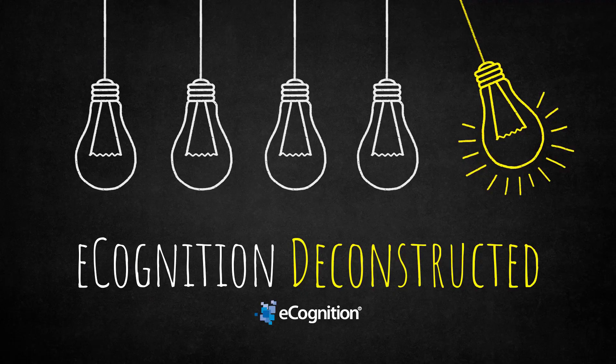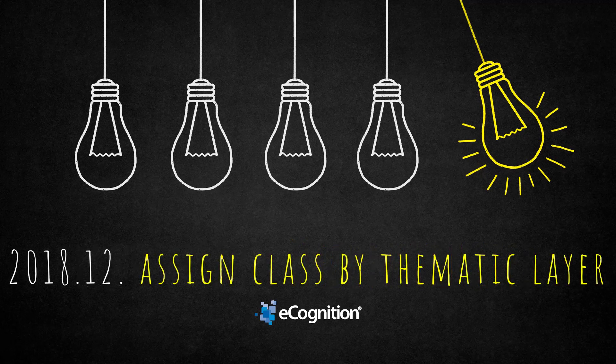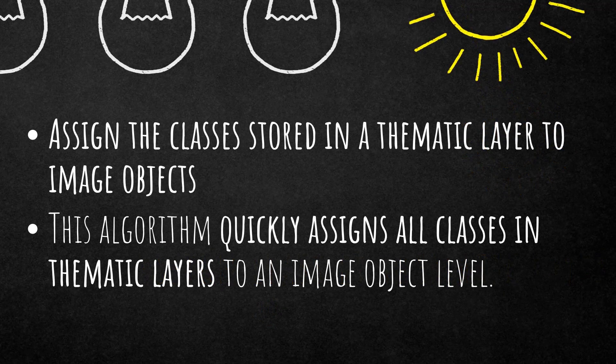Hello everyone and welcome to this eCognition Deconstructed video. Today we're going to have a look at an algorithm called 'Assign Class by Thematic Layer.' This algorithm is very helpful if you want to assign the classes stored in your thematic layer to your image objects within eCognition. It's a very fast algorithm that quickly assigns all the classes from your thematic layers to an image object level.